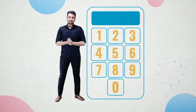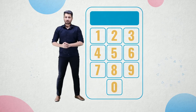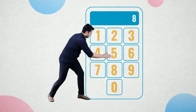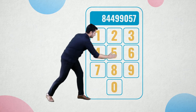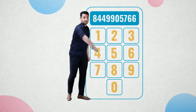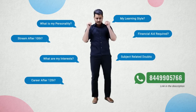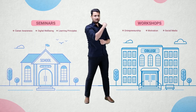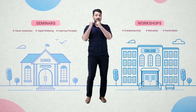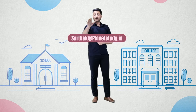Hello everyone, so happy that you clicked on this video. Before we begin, 844-99-057-66 is our WhatsApp number — you can send all your career queries. Schools and colleges who want to conduct our seminars and workshops can email us at Sarthak@TheRedPlanetStudy.in.